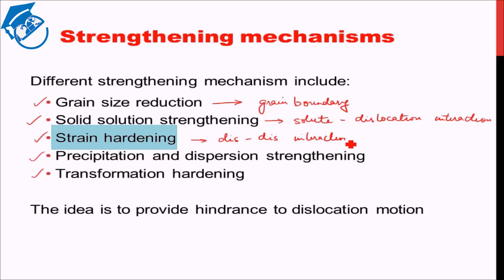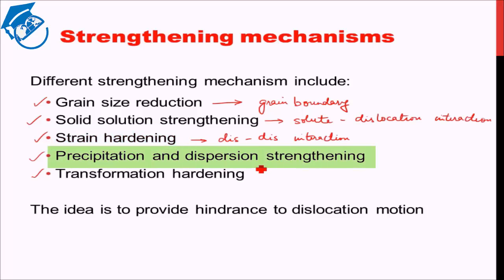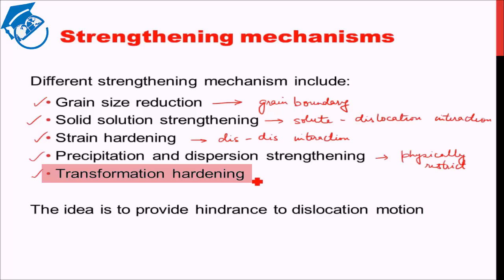Strain hardening is basically the creation of many dislocations, thereby causing dislocation-dislocation interaction, which leads to difficulty in the movement of dislocations. Precipitation and dispersion strengthening: precipitates or dispersed particles formed throughout the material physically restrict the dislocation motion. Transformation hardening is a completely different mechanism — not exactly a restriction to dislocation motion — so we will see that later.